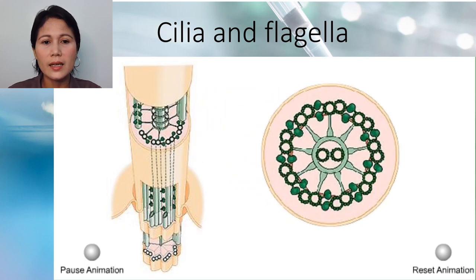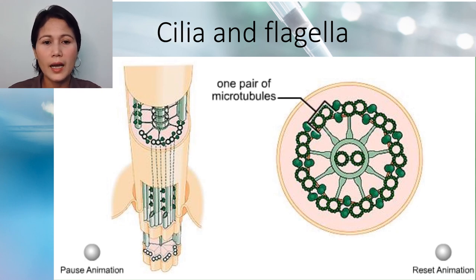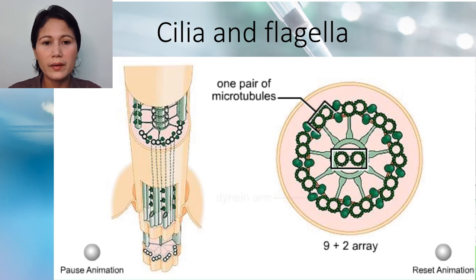Let's take a closer look at its structure. Both cilia and flagella have a ring of nine pairs of microtubules arranged around a central pair in a 9-plus-2 array.